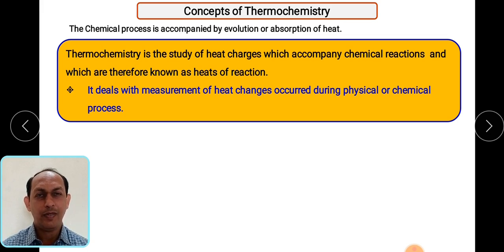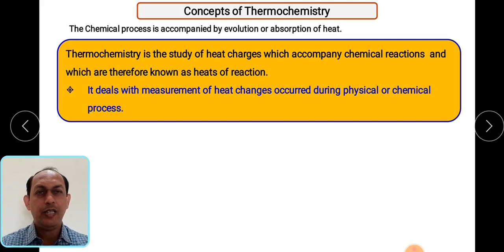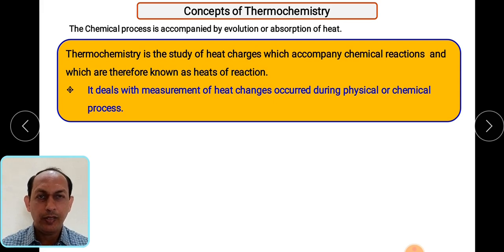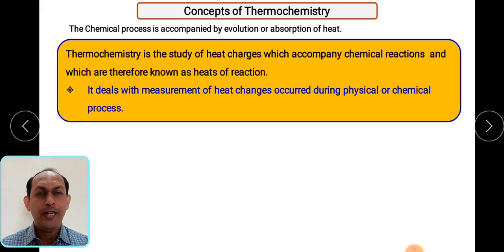In order to study these heat changes accompanied with the chemical process, the term thermochemistry has been introduced into thermodynamic calculation. Thermochemistry is the branch of physical chemistry which basically studies the heat changes that accompany a chemical reaction — known as heat of reaction. The branch that helps us determine whatever heat changes occur during a reaction is called thermochemistry.